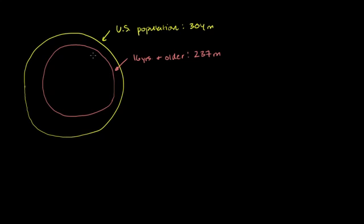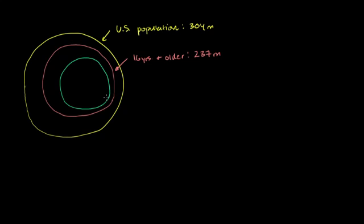Now, we can't just say all of these people could possibly work, because a lot of them are in college, some of them are in high school, some of them might not have the ability to work, some of them might be retired. So we want to just take a subset of this population that is essentially part of the labor force, in that they are working or they are actively looking for work. So this right over here is the labor force.